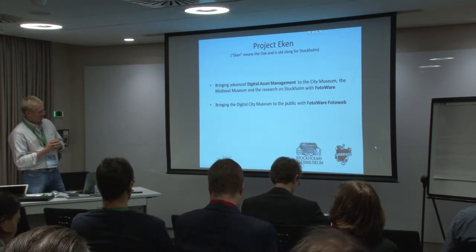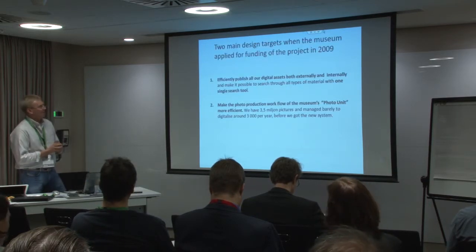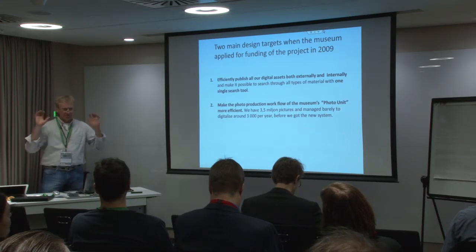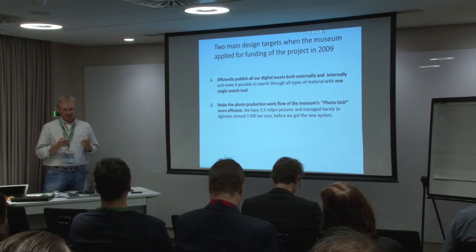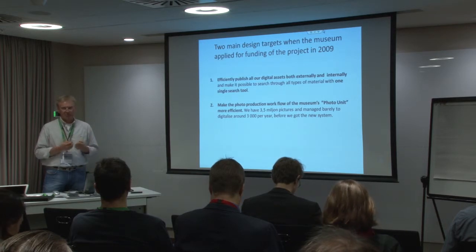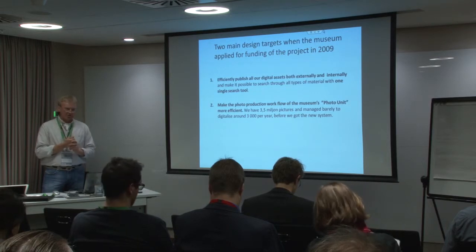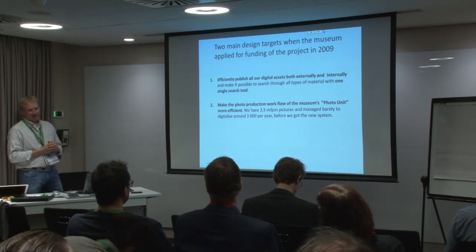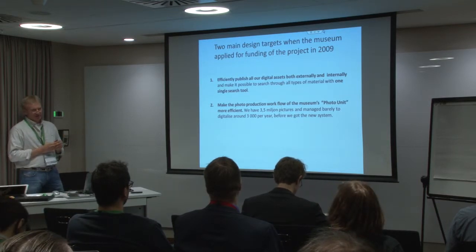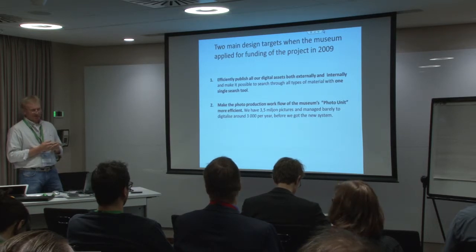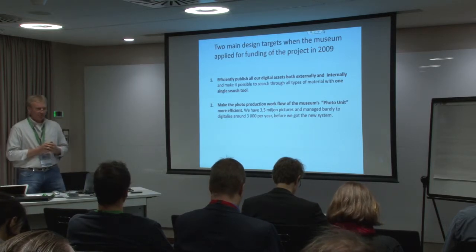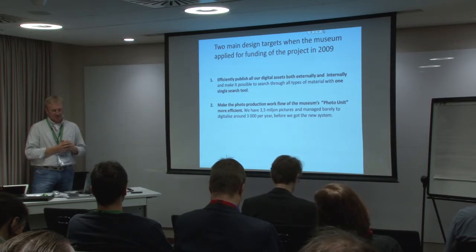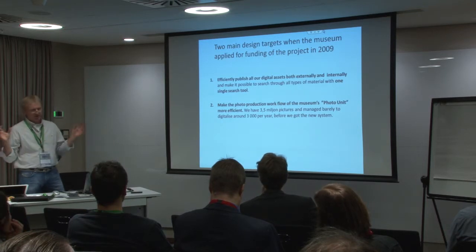We have two main design targets. The first is to get all the collections out to the public. The second is to improve the processes — mainly the photo processes — since we have so many analog photographs to handle, and to speed up these processes to take care of historical heritage that is slowly deteriorating in storage. We have about 3 million pictures and we have digitized about 1% of that, something like 40,000 photographs today.